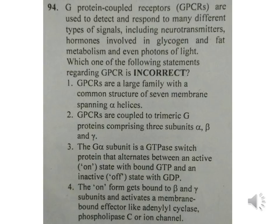The fifth and final question: G protein-coupled receptors (GPCRs) are used to detect and respond to many different types of signals including neurotransmitters, hormones involved in glycogen and fat metabolism, and even photons of light. Which one of the following statements is incorrect? (1) GPCRs are a large family with common structure of seven membrane-spanning alpha helices; (2) GPCRs are coupled to trimeric G protein comprising three subunits: alpha, beta, and gamma; (3) G alpha subunit is a GTPase switch protein that alternates between an active 'on' state bound to GTP and an inactive 'off' state; (4) the 'on' form gets bound to alpha, beta, and gamma subunits and activates membrane-bound effectors like adenylate cyclase, phospholipase, and ion channels.